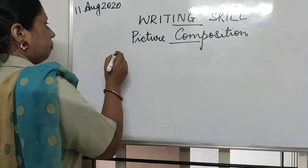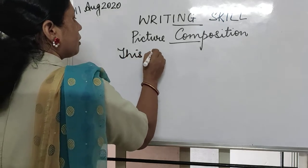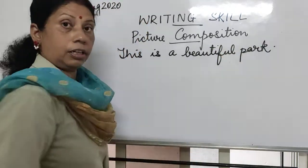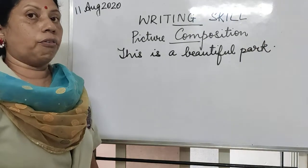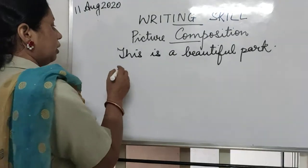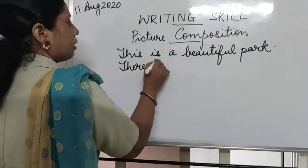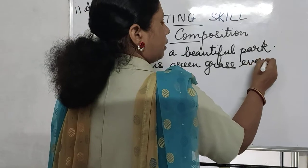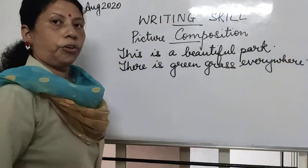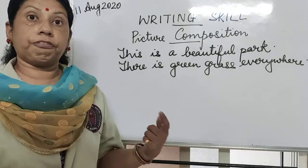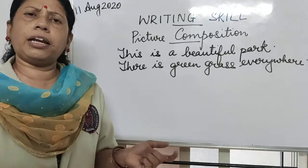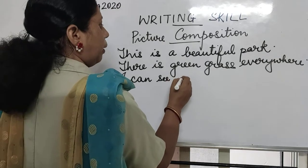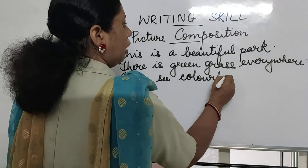Now let us see — this is a beautiful park. Park is normally very beautiful. So we write: 'This is a beautiful park.' What do I see there? The green grass. So: 'There is green grass everywhere.' You also must have seen colorful flowers — a variety of flowers. So we write: 'I can see colorful flowers.'